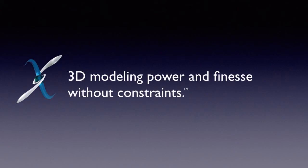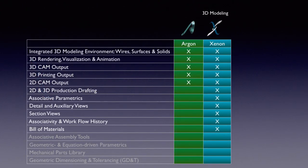Our mid-priced 3D modeler is Xenon. It brings 3D modeling power and finesse without constraints. Xenon has everything Argon does, plus 2D and 3D production drafting, associative parametrics, detail, auxiliary, and section views, associativity and workflow history for easy revisions, and a bill of materials.